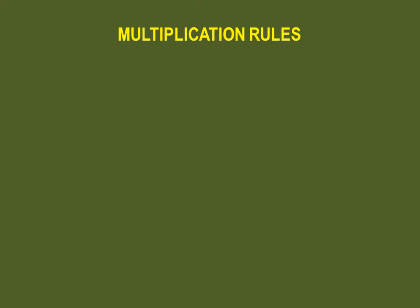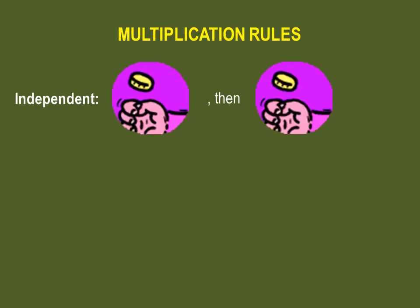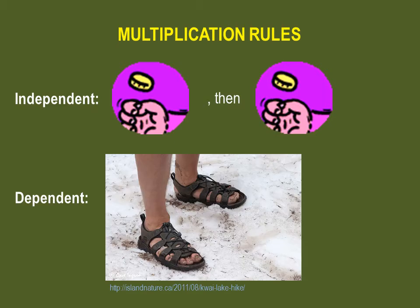Independent events do not influence each other. When you flip a coin twice, the result of the second toss does not depend whatsoever on the result of the first toss. But if you choose to wear sandals over boots in December, this will greatly influence whether or not you will get frostbites.